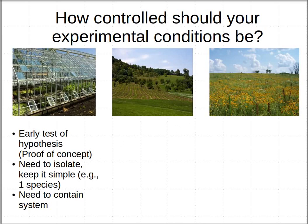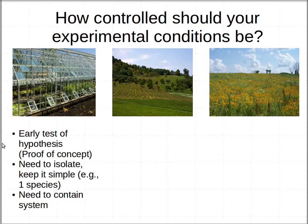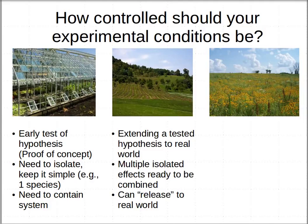So there's a spectrum where the most carefully controlled conditions — like in a greenhouse — are your opportunity to conduct an early test of a hypothesis, a proof-of-concept idea. You want to try to work with a simple system, a single plant species, something you can manage most carefully. It might even be a set of experiments where you need to contain the system — you don't want that species to get out, or maybe don't want some other things to get in. If you step outside, you're talking perhaps about extending that tested hypothesis to the real world. You ran some experiments in the greenhouse and it looks like fertilizer makes plants grow, so you step outside to see what happens in the real world.